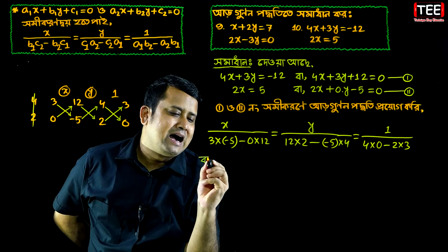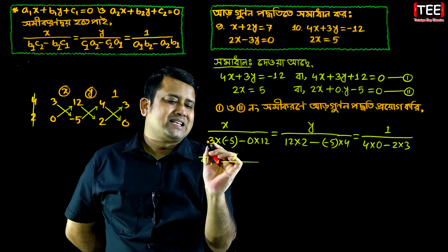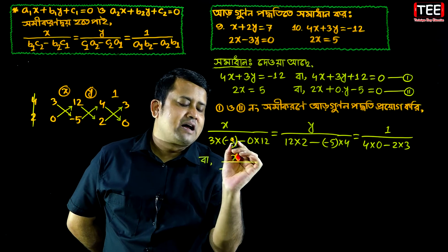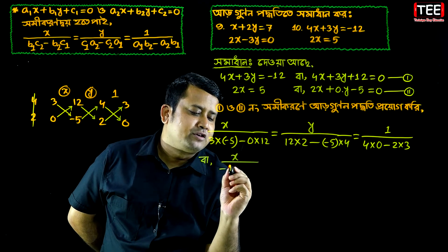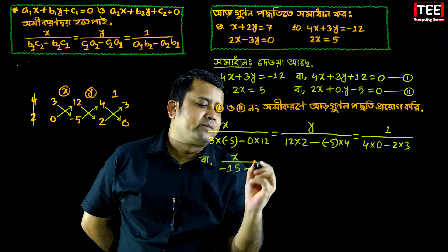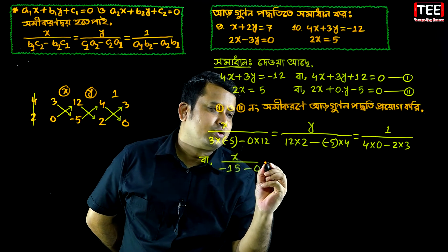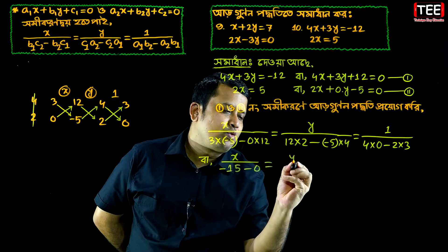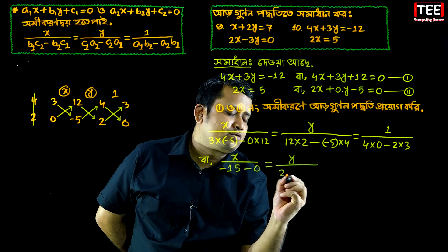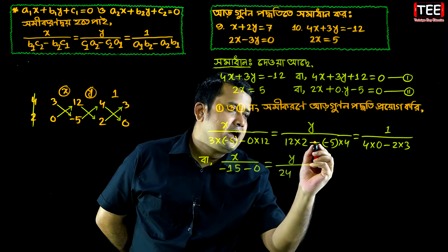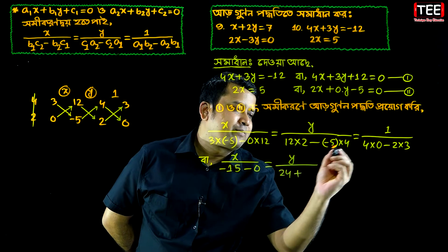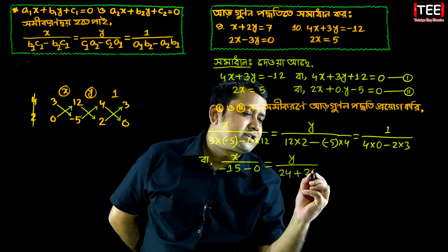So: 2, x, plus, minus, minus, 3, r. 5, r. 15. Minus, 0, r. 12, r. 0. Equal to y, plus, 12, r. 2, r. 24. Minus, plus, 5, r. 4, r. 20. Equal to 1, plus, 4, r. 0, r. 0, minus, 2, r. 3, r. 6.